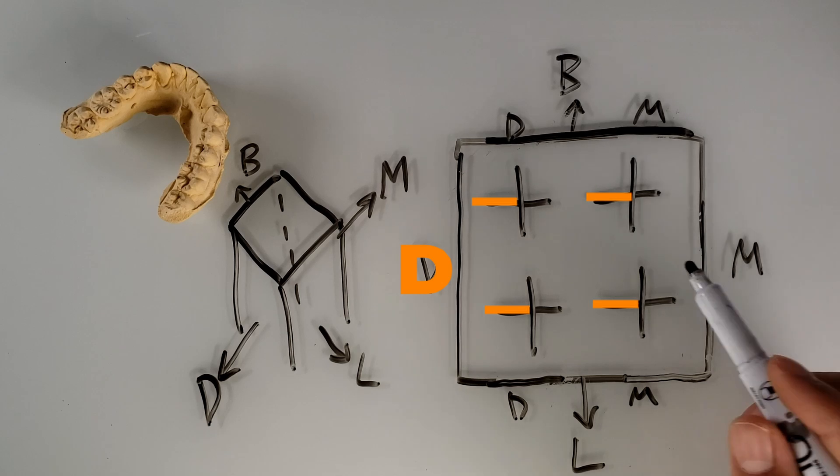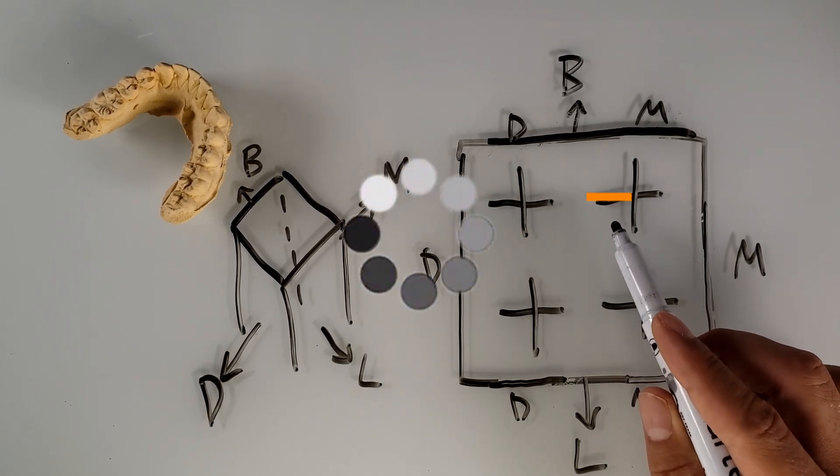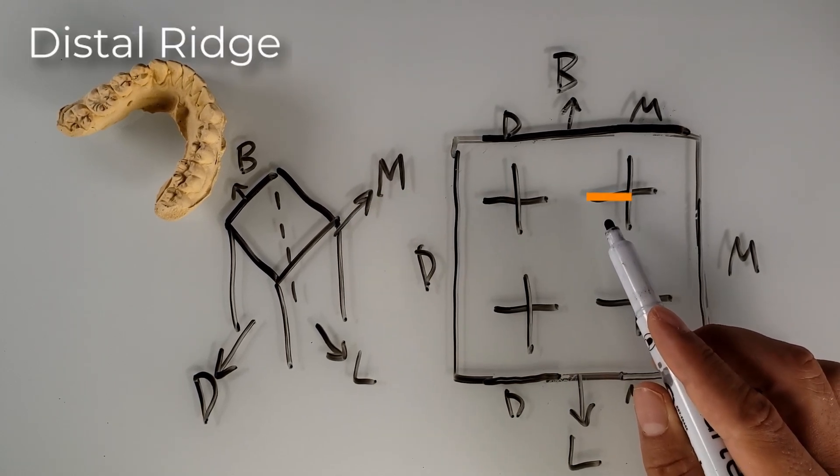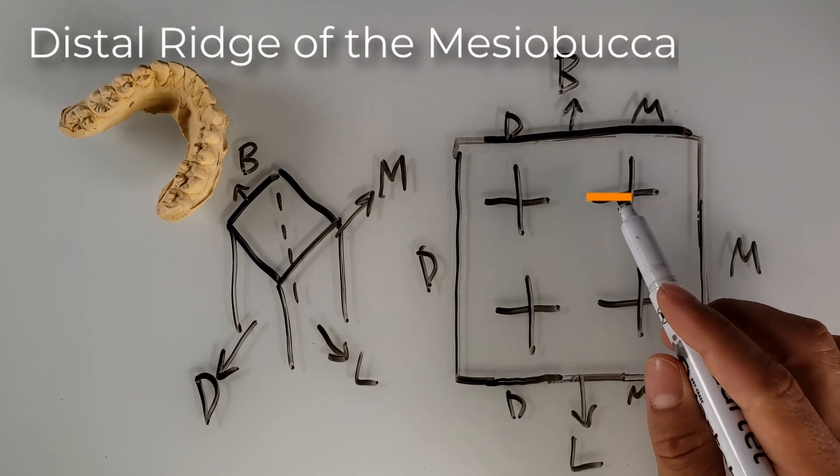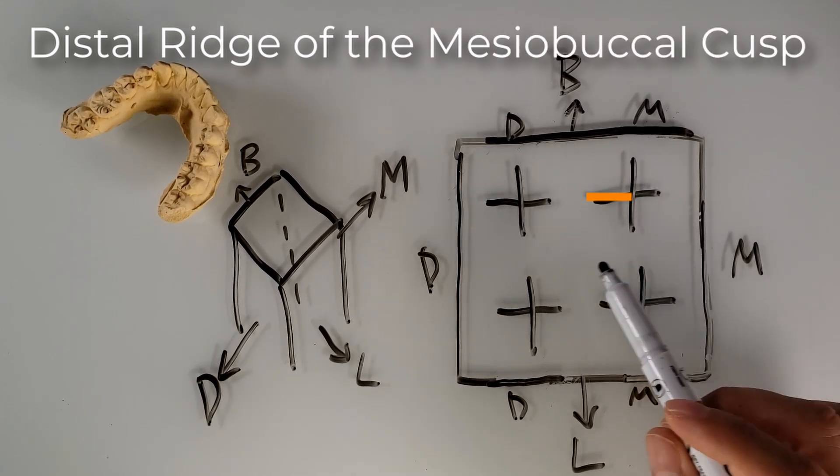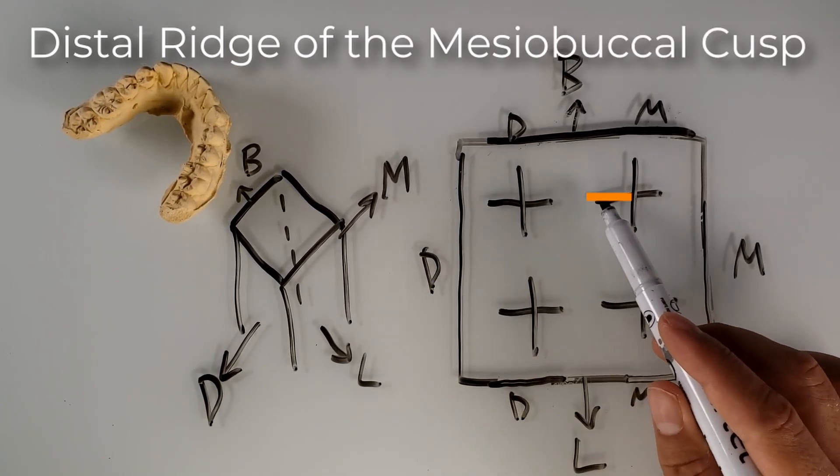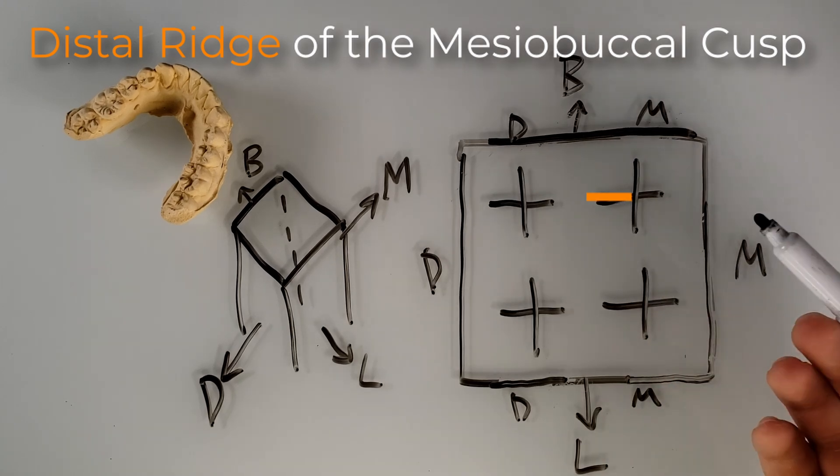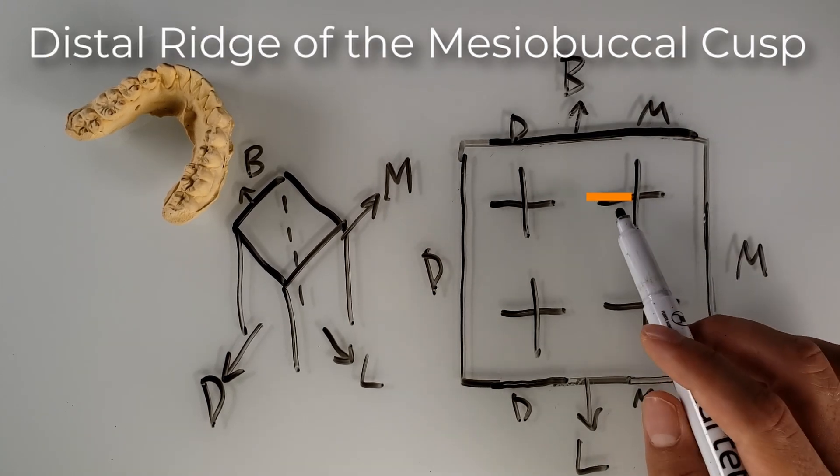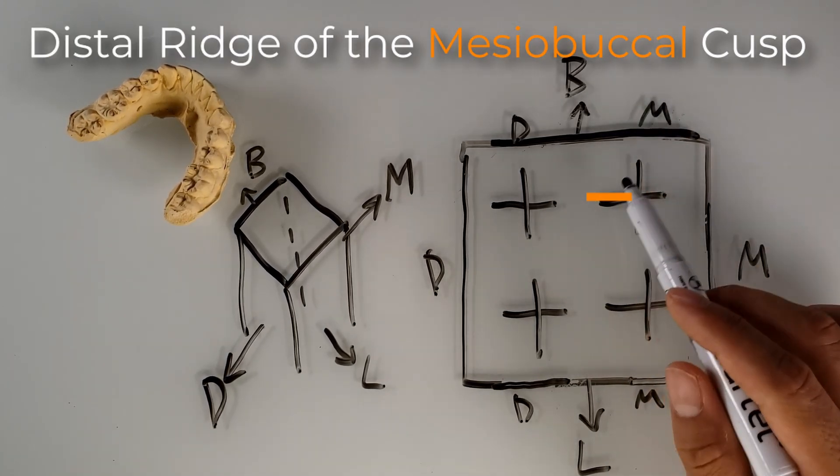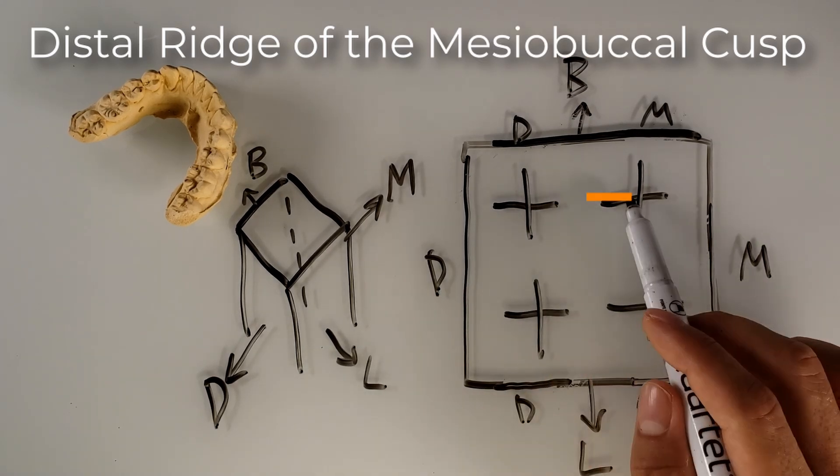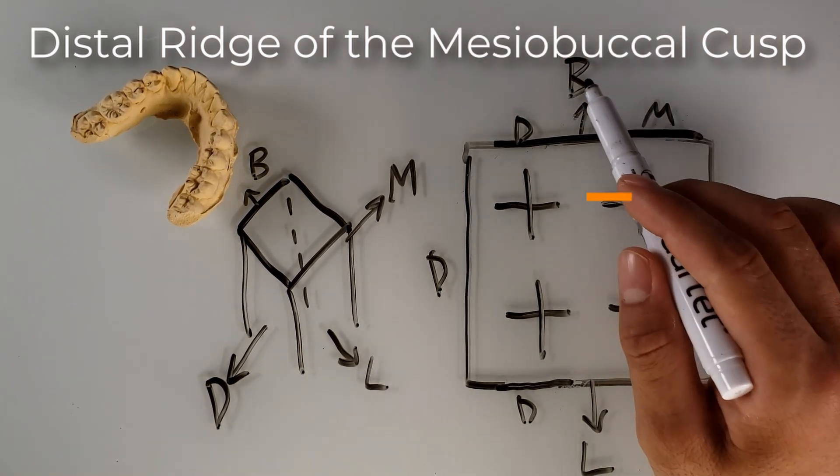So now we would refer to this one as the distal ridge of the mesial buccal cusp. Let's walk through that. This is the distal side. So this would be the distal ridge because again, we're using that compass from the earlier video. And then this is the mesial buccal cusp. So it's the distal ridge of the mesial buccal cusp.